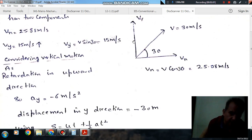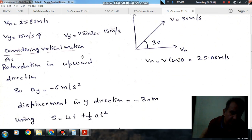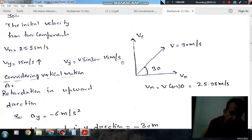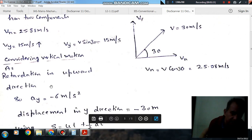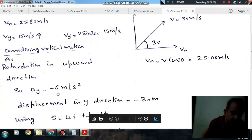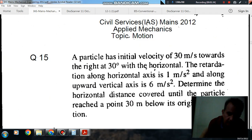Now consider the motion in vertical direction. In vertical direction, the velocity is 15 m per second and there is retardation in vertical direction, so that is given as minus 6. Retardation is 6, so acceleration is minus 6 m per second squared. And it is given that the final displacement is minus 30 m, or as you can say, the particle has reached a point 30 m below its original elevation.